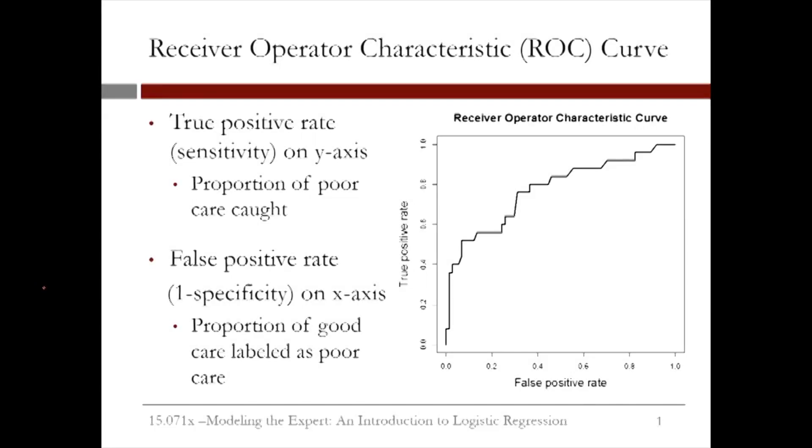Picking a good threshold value is often challenging. A receiver operator characteristic curve, or ROC curve, can help you decide which value of the threshold is best.